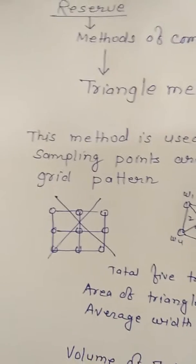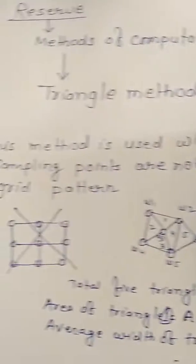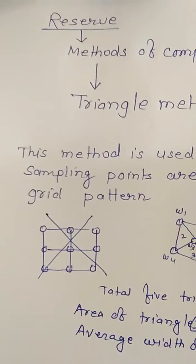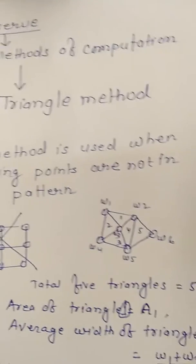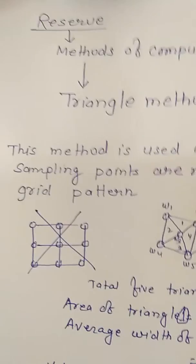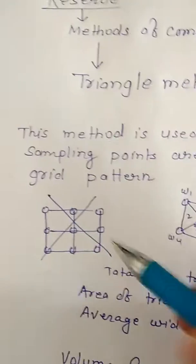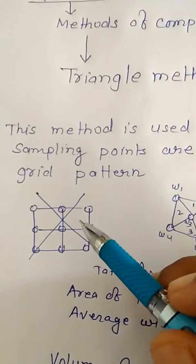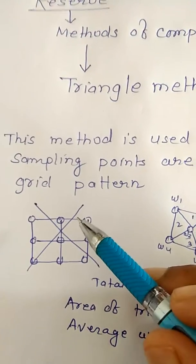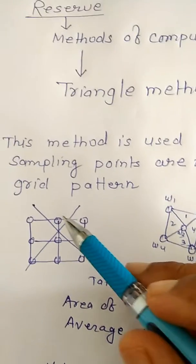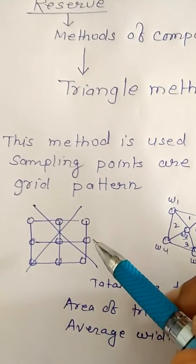This method is used when sampling points are not in a grid pattern. As shown in this diagram, we have illustrated what a grid pattern looks like, and that these samples are not in grid patterns.